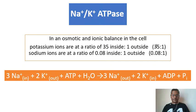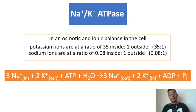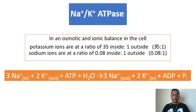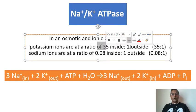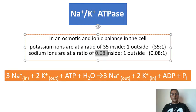Sodium-potassium ATPase is simply called the sodium pump. In mammalian cells, the sodium and potassium gradients are the two major components of the electrochemical gradient across the plasma membrane. Cells maintain a lower intracellular sodium concentration and a higher intracellular potassium concentration relative to the extracellular space. In osmotic and ionic balance, potassium ions are at a ratio of 35 inside to 1 outside, whereas sodium ions are 0.08 inside to 1 outside — so the ratios are skewed.